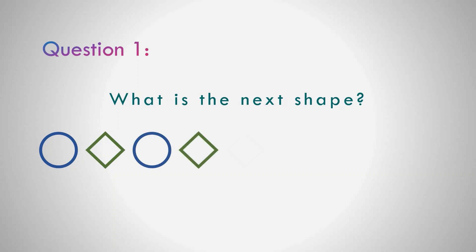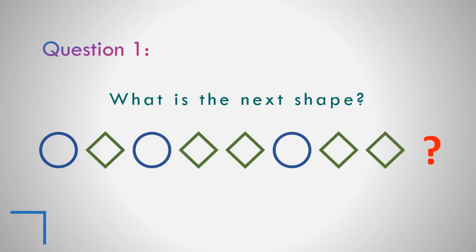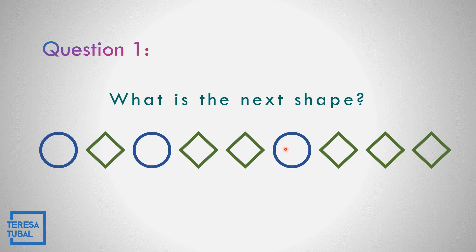What do you think is the next shape after diamond? The next shape after diamond is diamond. Because one circle and then one diamond, another one circle, that is two diamonds, and another one circle, so plus one diamond, that is equal to three diamonds.